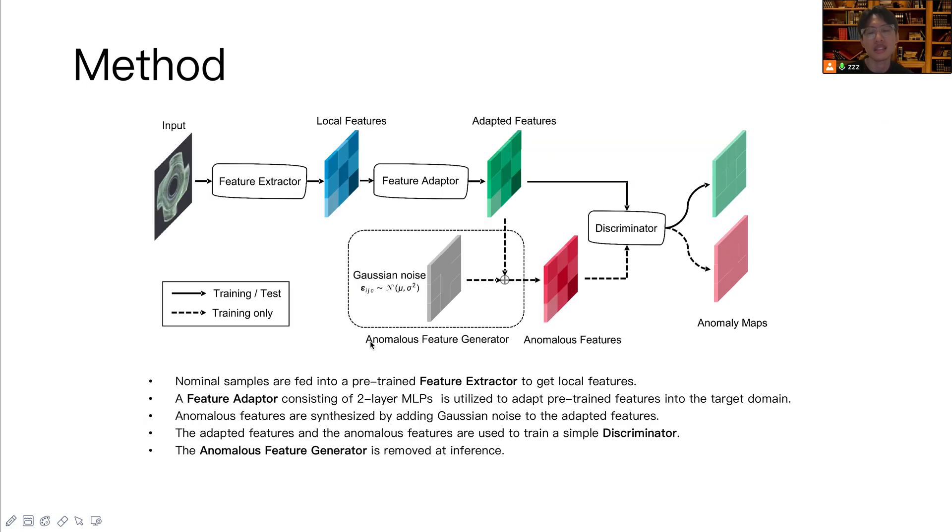Here's the details of our model. It consists of four components. A pre-trained feature extractor that generates features from different hierarchies and merge them into their normal local features. So local features include different semantics. A feature adapter that tries to project the local features into a more compact feature space, which facilitates the training process.